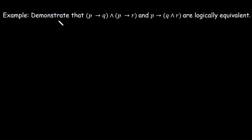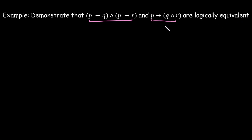Now let's understand with an example how we can show that two statements are logically equivalent. We need to show that these two compound propositions are logically equivalent using a truth table. First, we identify the unique propositions: P, Q, and R — three unique propositions. With three propositions, there are 2 raised to the power 3, which equals 8 possible cases in the truth table.